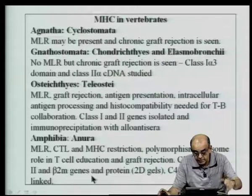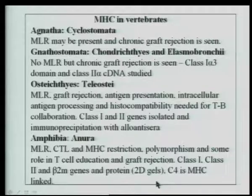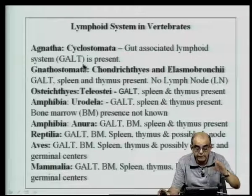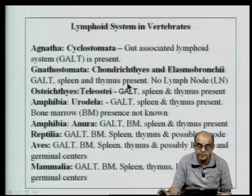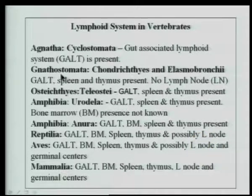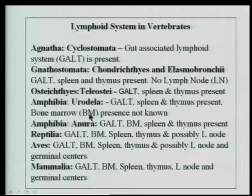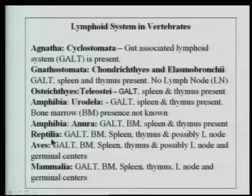Several such studies have been done in various organisms. Looking at the lymphoid system, GALT is present in cyclostomata — the gut-associated lymphoid system. GALT, bone marrow, spleen, and thymus are present in amphibia, but bone marrow is not known in earlier amphibia like urodeles. As you go on to reptilia, aves, and birds, all these different kinds of lymph nodes are present.